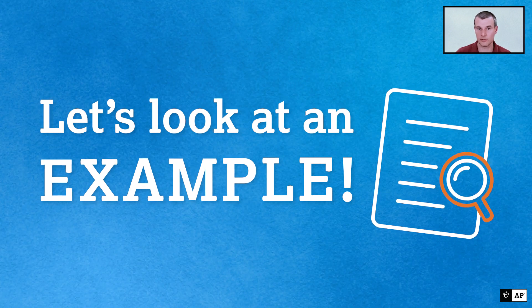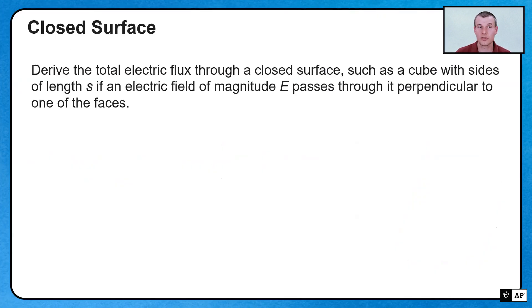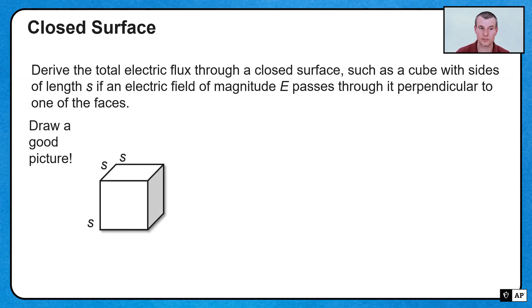So let's look at an actual example. In particular, we want to derive the total electric flux through a closed surface, such as a cube with sides of length s, if an electric field of magnitude E passes through it perpendicular to one of those faces. If this is a question that was given to you, one of the first things you should do is draw a good picture.